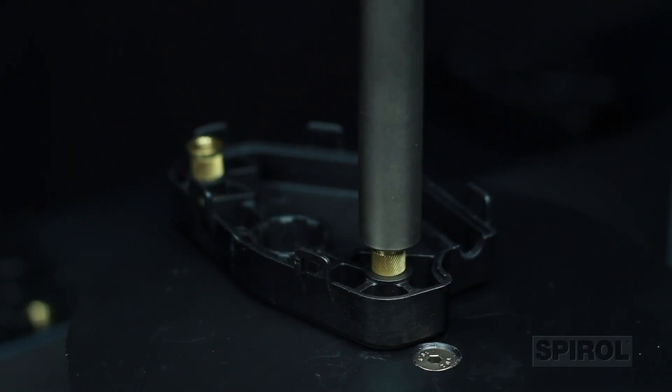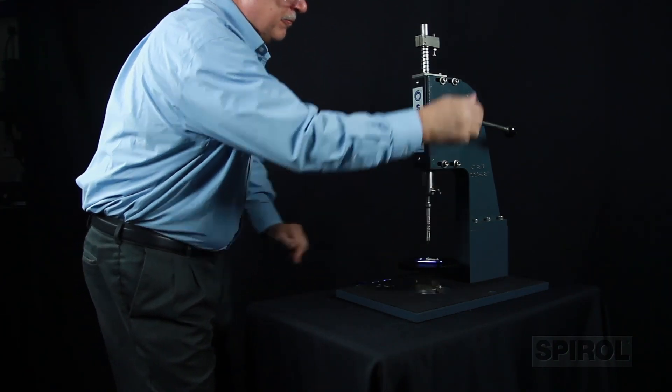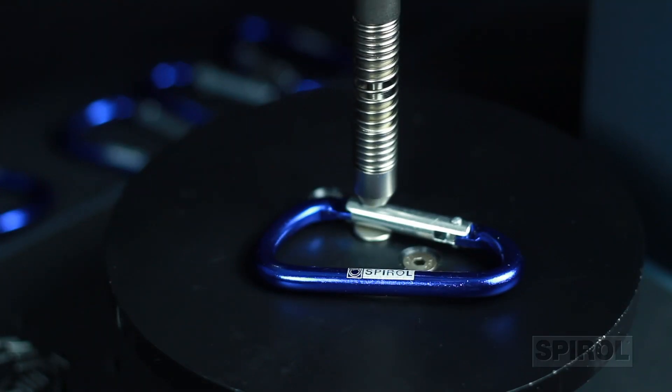Fixturing, one of Spiral's key strengths, allows us to apply over 60 years of installation experience to provide you with the most efficient application-specific part holding method to ensure stability and alignment during installation.